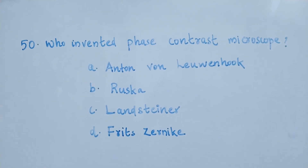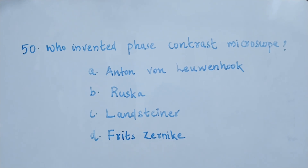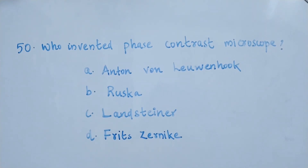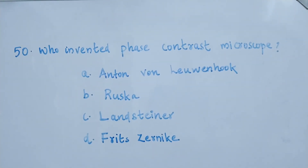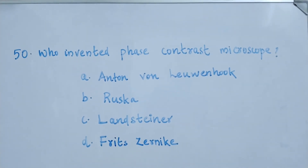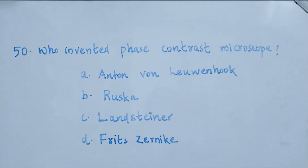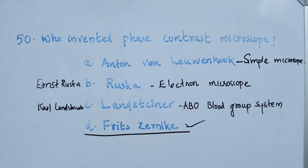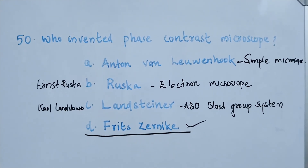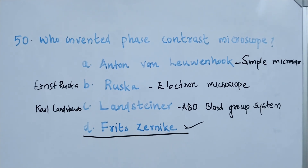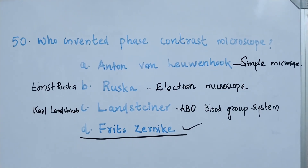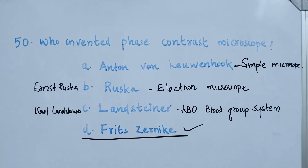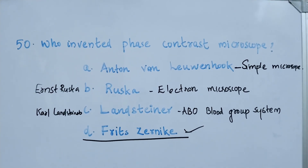Question number 50. Who invented the phase contrast microscope? Option A: Antonie van Leeuwenhoek. Option B: Ernst Ruska. Option C: Lance Treynor. Option D: Fritz Zernike. The right answer is option D, Fritz Zernike. The phase contrast microscope is invented by Fritz Zernike. Antonie van Leeuwenhoek invented the simple microscope. Ernst Ruska invented the electron microscope. And Karl Landsteiner discovered the ABO blood group system.